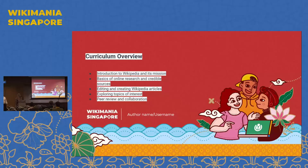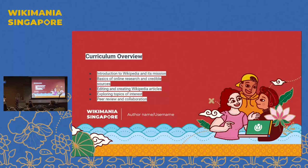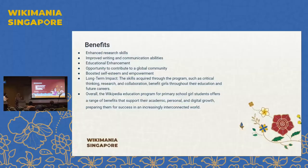School is always about curriculum, so we try to introduce Wikipedia and make it part of the curriculum. Editing a Wikipedia article is counted in our program as a participation grade for the teacher's assessment of students. We encourage students to explore their areas of interest — usually very basic concepts — and we teach them how to collaborate with their peers.